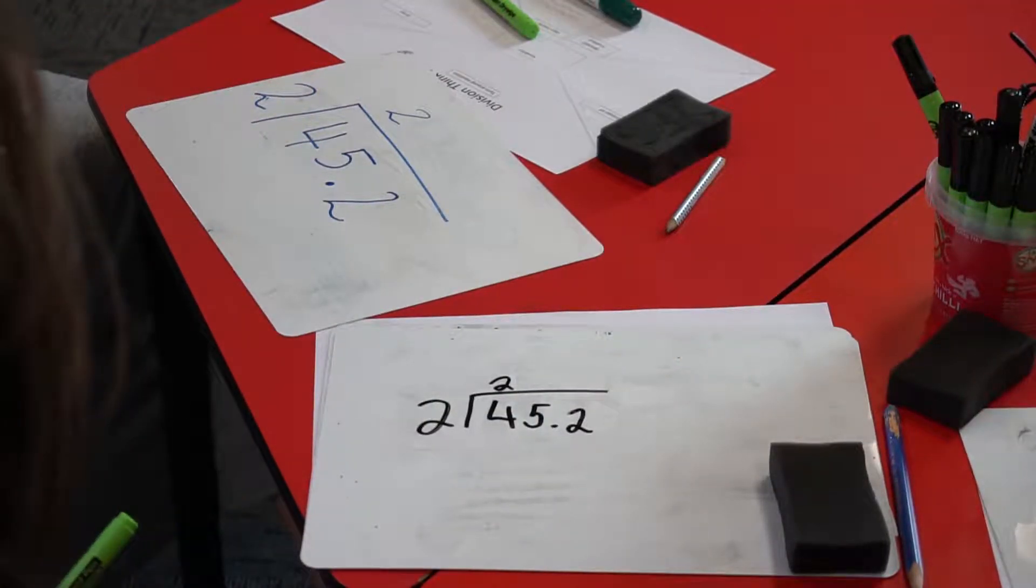Five, how many twos? Two. Easy way to do it, use your hands. One, two, two twos. Okay, that's two.